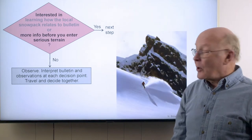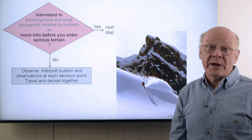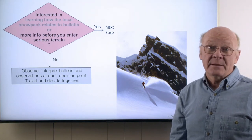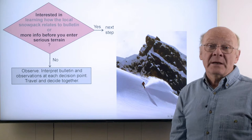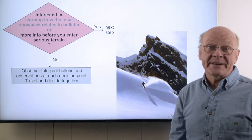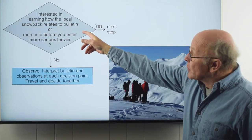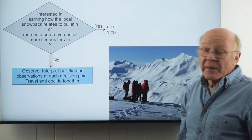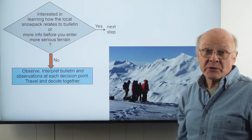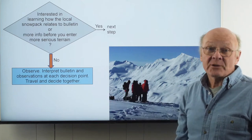By serious terrain, we mean any slope big enough or steep enough which, under the worst snowpack conditions, could produce an avalanche that could bury or kill a person. We consider slopes that are bigger, steeper, or located above a terrain trap to be serious avalanche terrain. We also consider terrain rated as challenging or complex in Canada to be serious. If neither of these motivations apply to you, then stick with a less steep and cautious route on your trip plan. Observe, decide, and travel together.